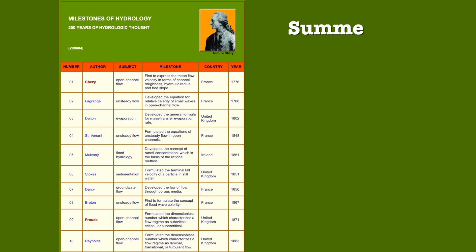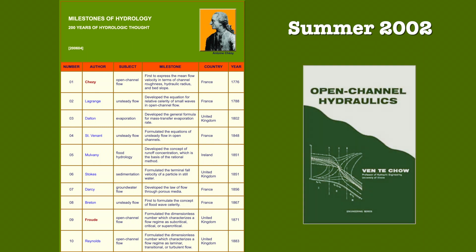In the summer of 2002, while researching the writing of Milestones of Hydrology, I noticed that Venti Chow had mentioned the Froude number in his popular textbook, but had not elaborated on its origins.